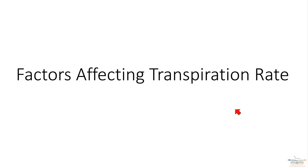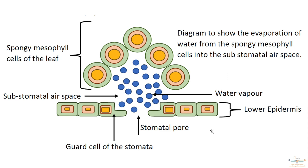In this video I'm going to go through transpiration and the factors that affect how quickly that process can happen. I'll use various diagrams to explain this. This diagram is a representation of the leaf, in particular the spongy mesophyll cells, and underneath that is the lower epidermis with the stomatal pore. Transpiration is when water evaporates from the mesophyll cells in the leaf — the water turns into a gas — and that water vapor leaves the leaf via the stomata.